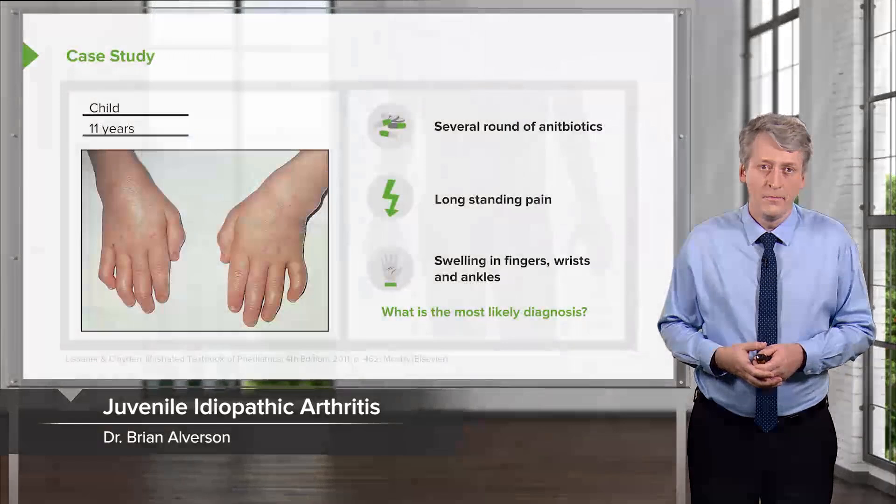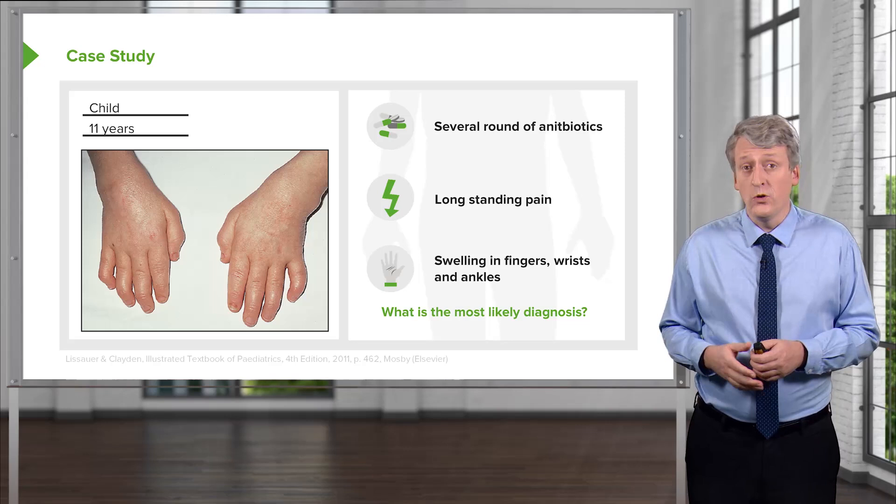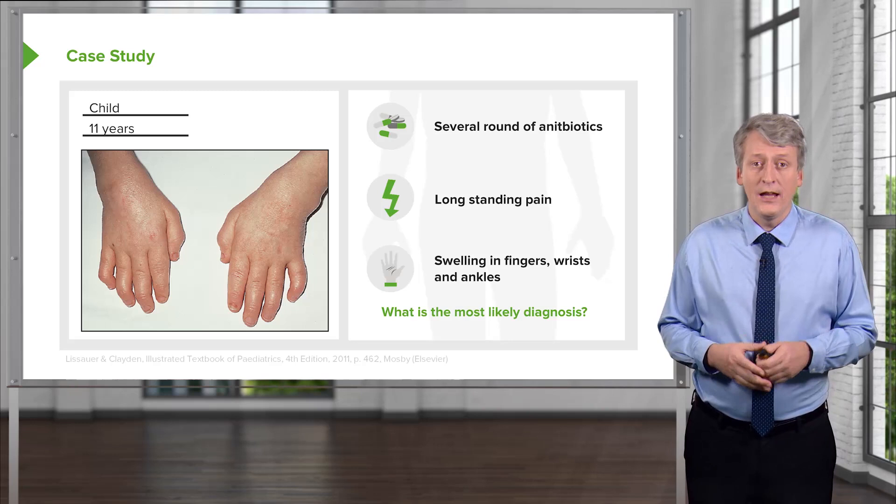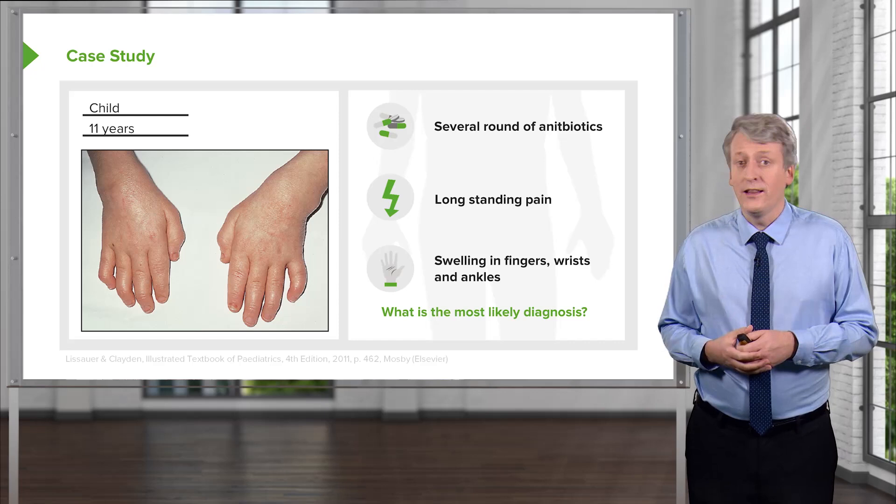In this lecture, we will discuss juvenile idiopathic arthritis. Here's a classic case: an 11-year-old child is presenting after several rounds of antibiotics with a complaint of long-standing pain and swelling of the fingers, wrists, and ankles. What's the most likely diagnosis? In this case, it's probably juvenile idiopathic arthritis, or JIA for short.